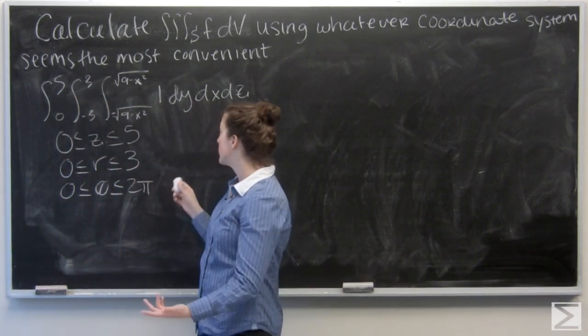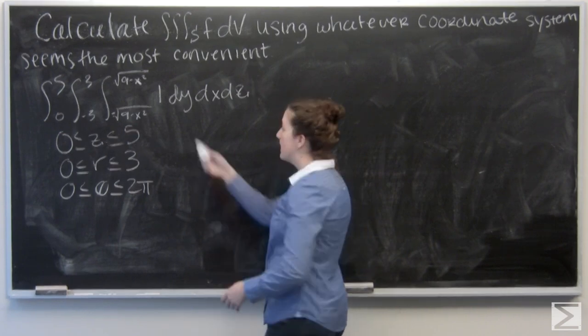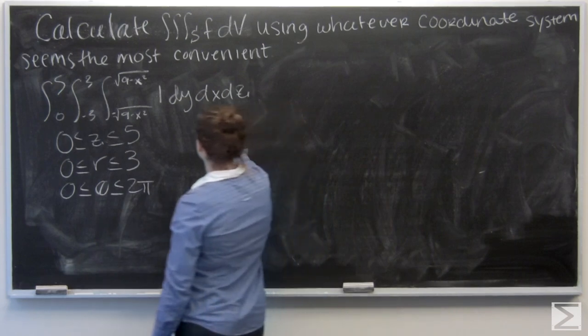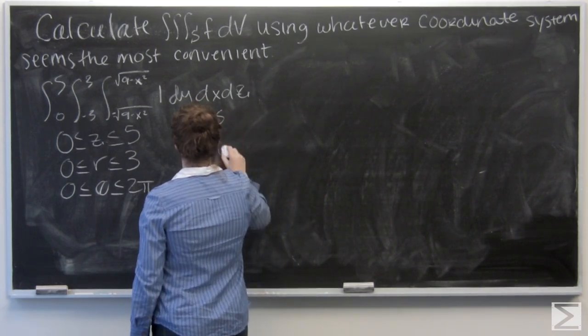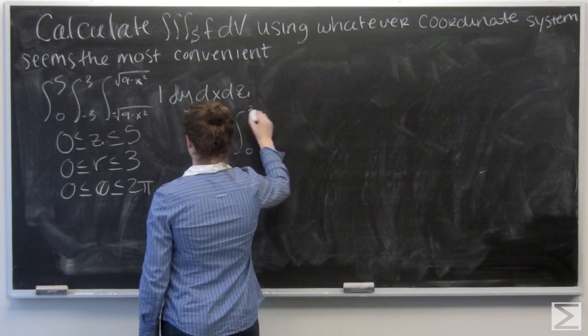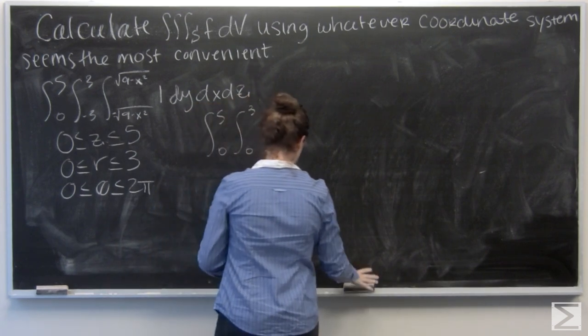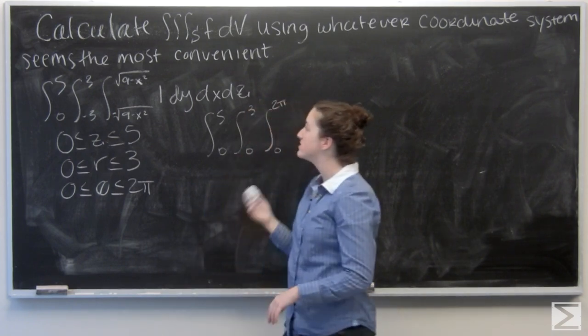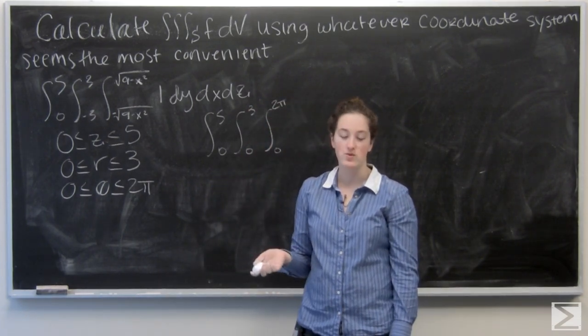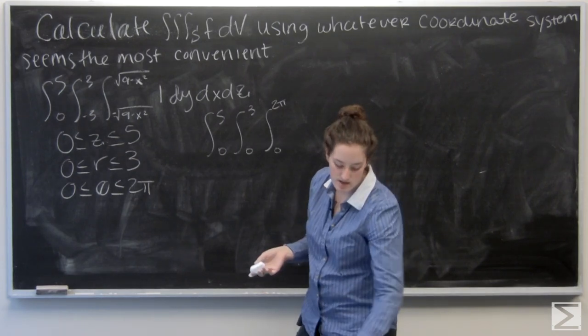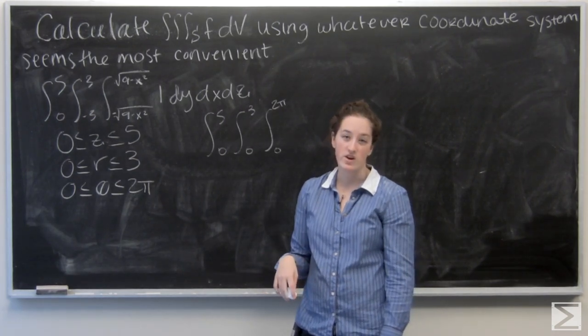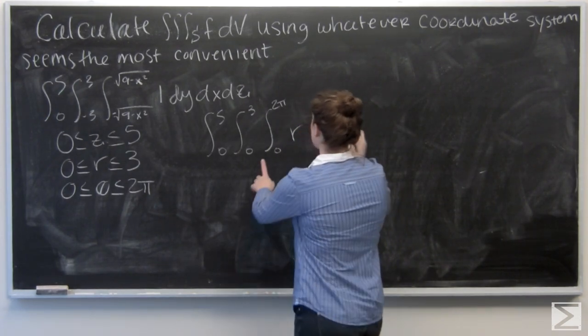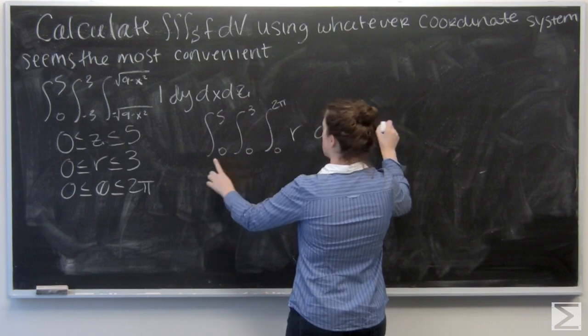So let me go ahead and rewrite the integral of this region. And my function here is just one, so that's not going to change or anything. And then remember, dv in cylindrical coordinates is r dz dr d theta. So I have d theta, dr, and dz.